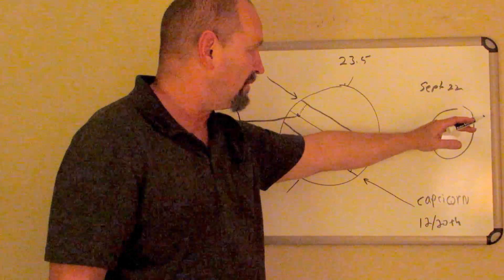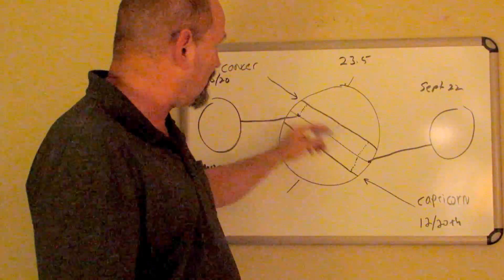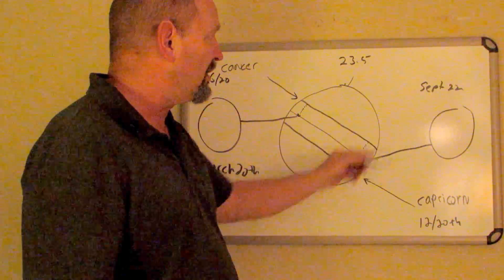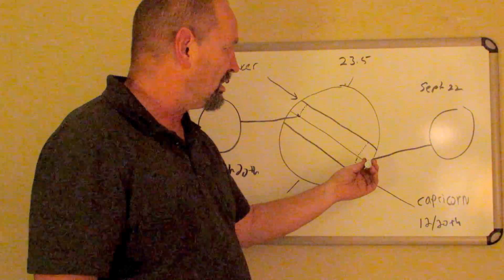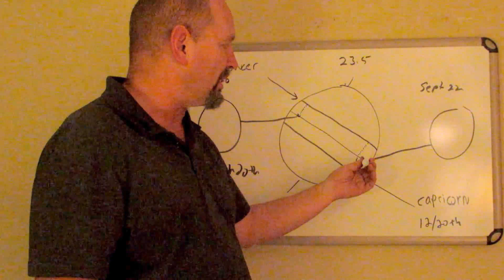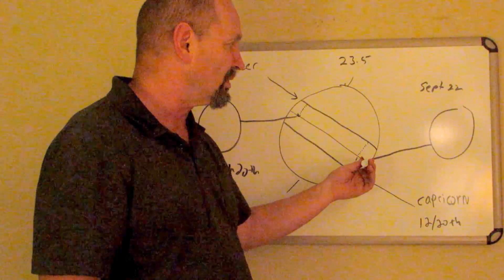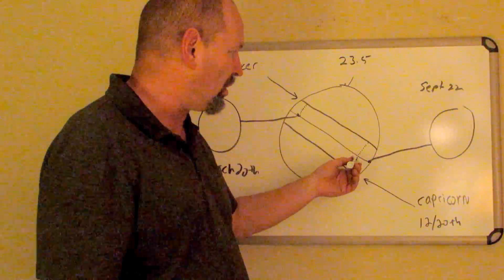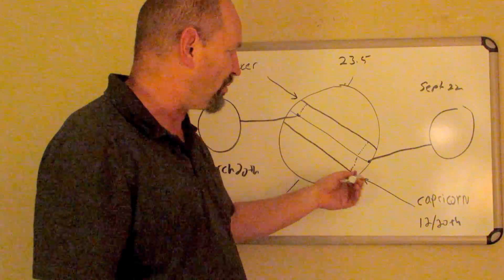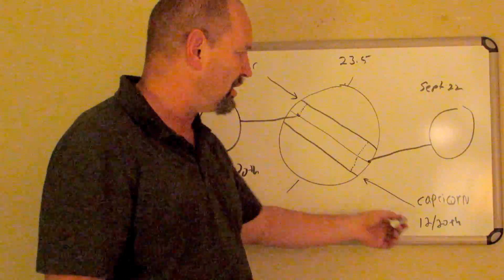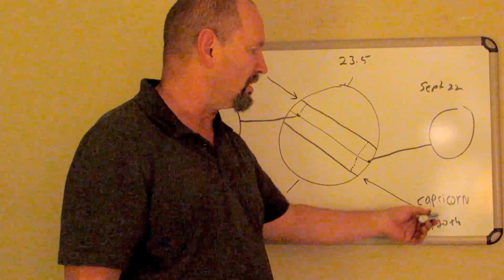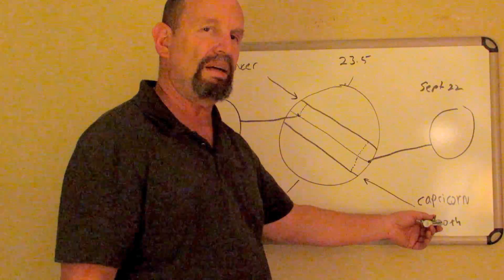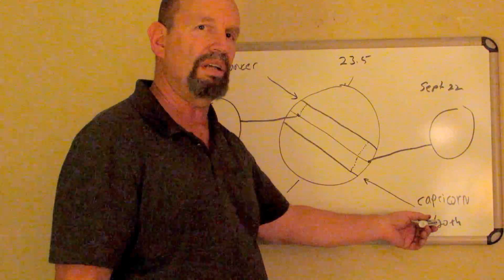This here is the fall equinox. After the summer solstice, the sun begins to work its way back down. On September 22nd, the sun is right back on the equator again. This is the fall equinox. It moves after the 22nd. It begins to drop lower and lower until it gets to the point where it's sitting at what we call the Tropic of Capricorn. 12/20, this is the winter solstice. So take a minute just to look at this. I'll step out of the screen. You can have a look at it and we'll go on to our next video.